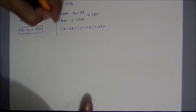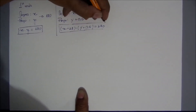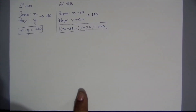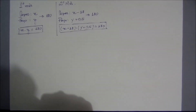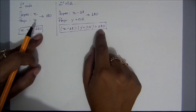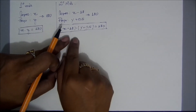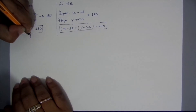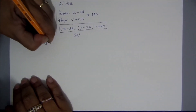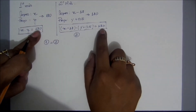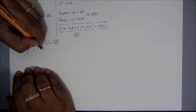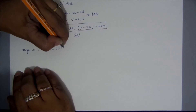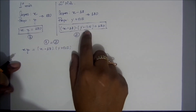Com isso, eu já tenho as minhas duas funções. E meu objetivo, na letra A, é descobrir o preço do copo, ou seja, descobrir o valor de Y. E depois, a quantidade de copos — o valor de X. Observando as duas expressões, todas elas são iguais a 180. Então, eu posso afirmar que a função 1 é igual à função 2. Ficará assim: X vezes Y da primeira função é igual a (X menos 18) vezes (Y mais 0,5) da segunda função.